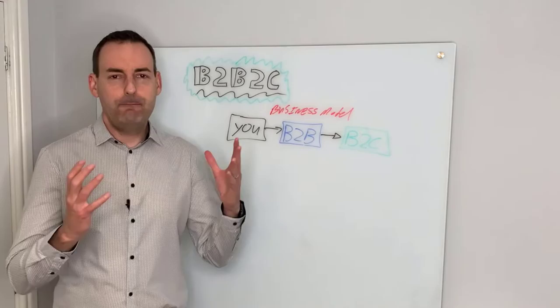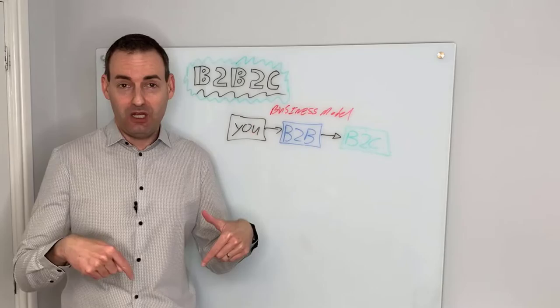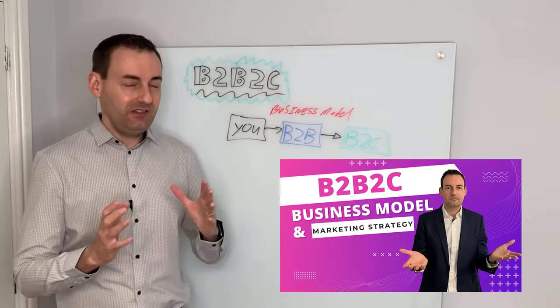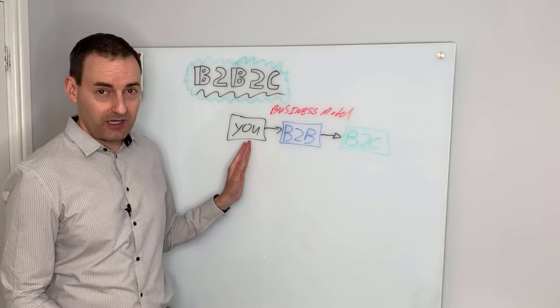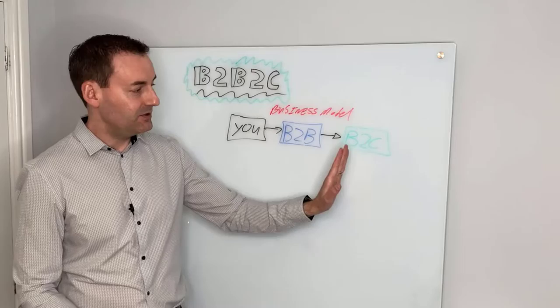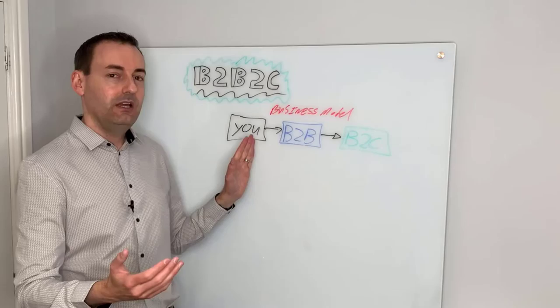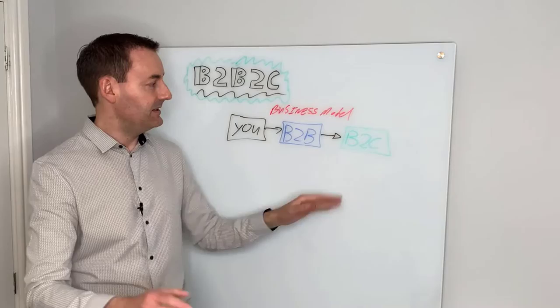So let's talk about the B2B to C business model. If you're still unclear about what B2B and B2C mean, I made two other videos on those — links in the description below. B2B to C in its simplest form is this: the same product goes through a value chain — you sell your product to another company, which is a B2B transaction, and that company sells it to the end customer or consumer, which is a B2C transaction. That's why it's called B2B to C — you're inserting someone between you and the end customer.